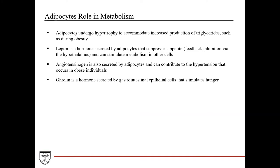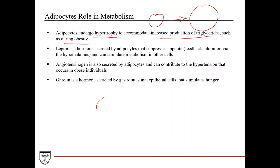A few other points: adipocytes undergo hypertrophy. From the cytology lecture, hypertrophy is when cells get larger. Since adipocytes are in the G0 phase — a static cell population — they're not going to undergo cell division. Instead they grow, undergoing hypertrophy, to accommodate increased production of triglycerides. They need to be larger in order to store more triglycerides, such as during obesity.